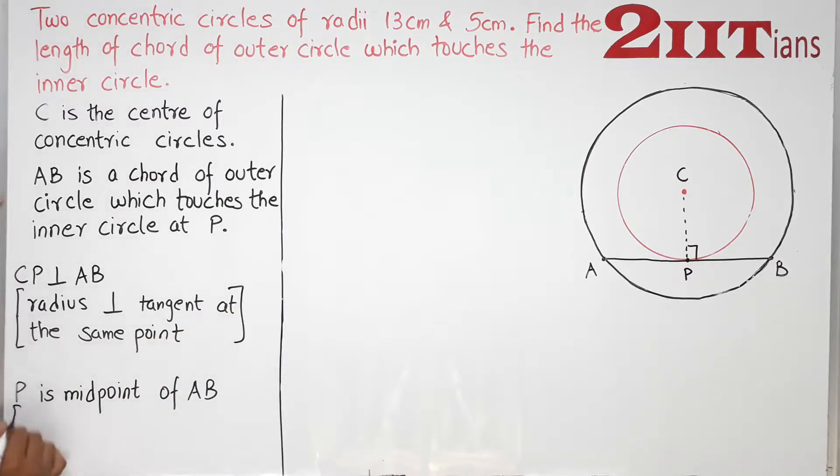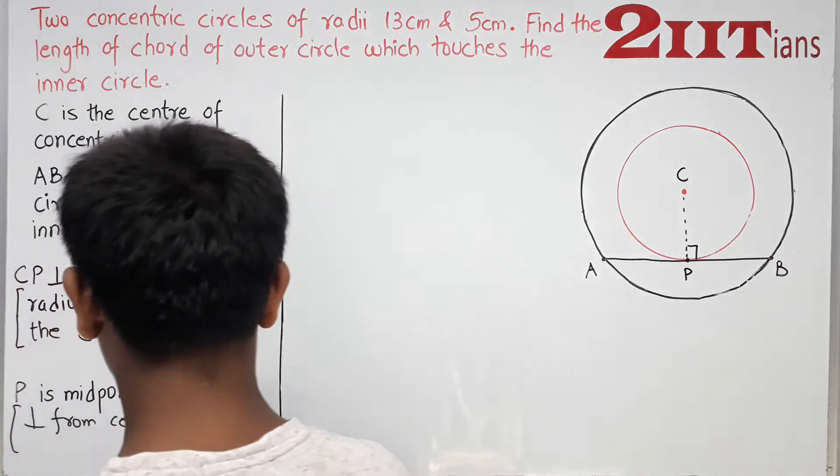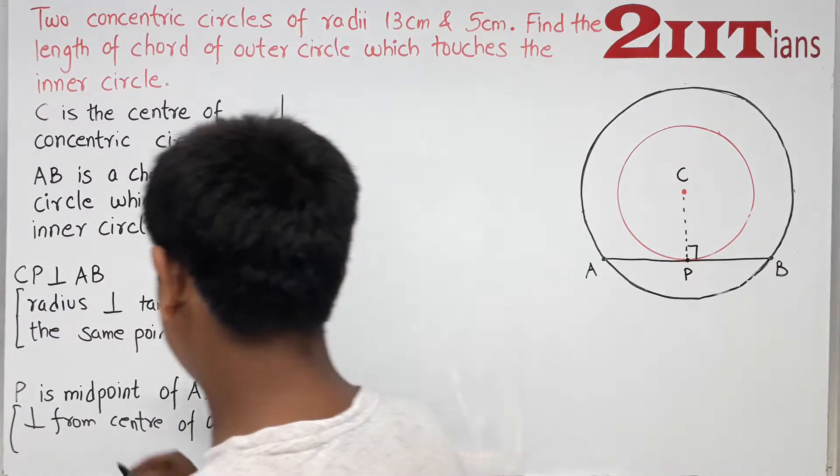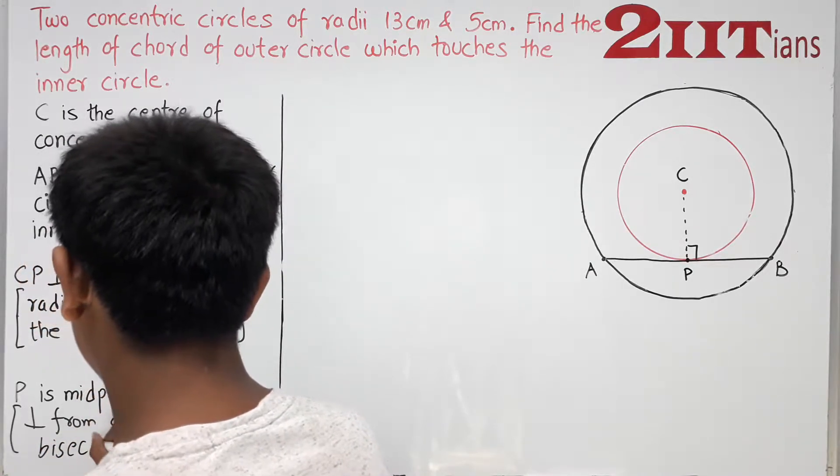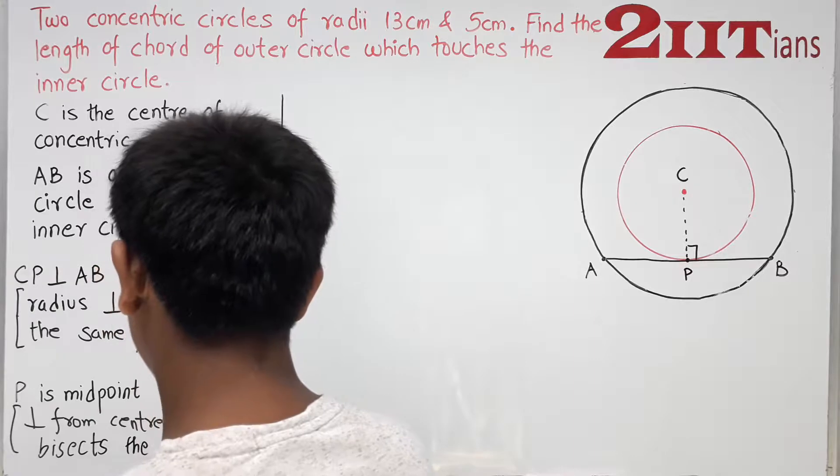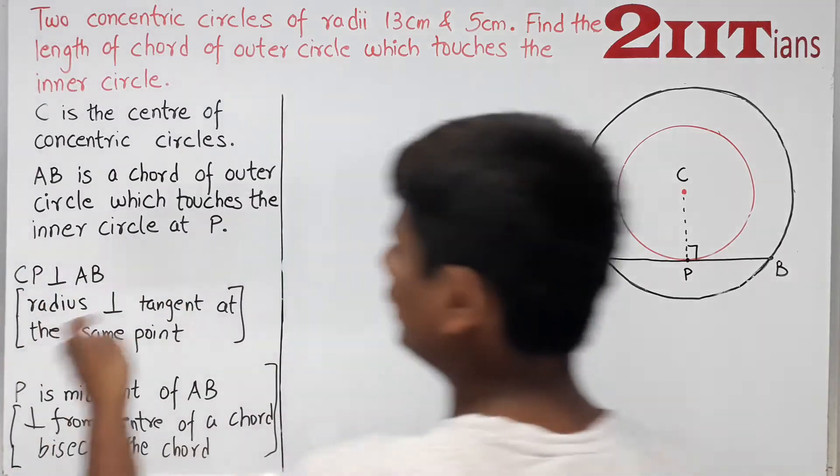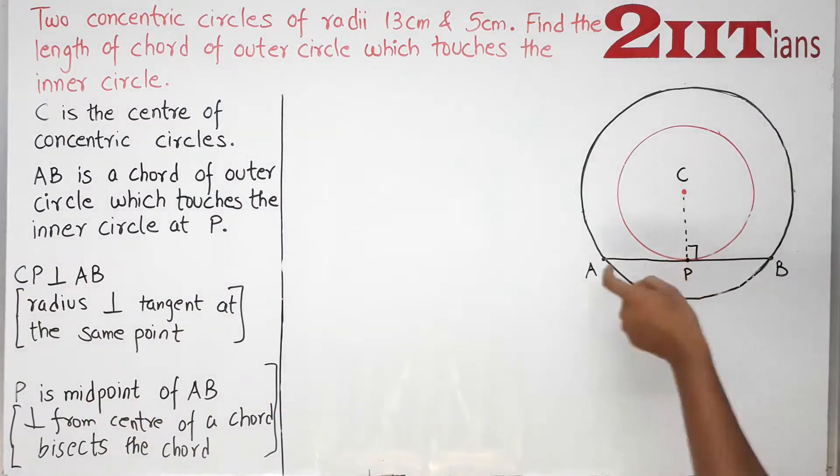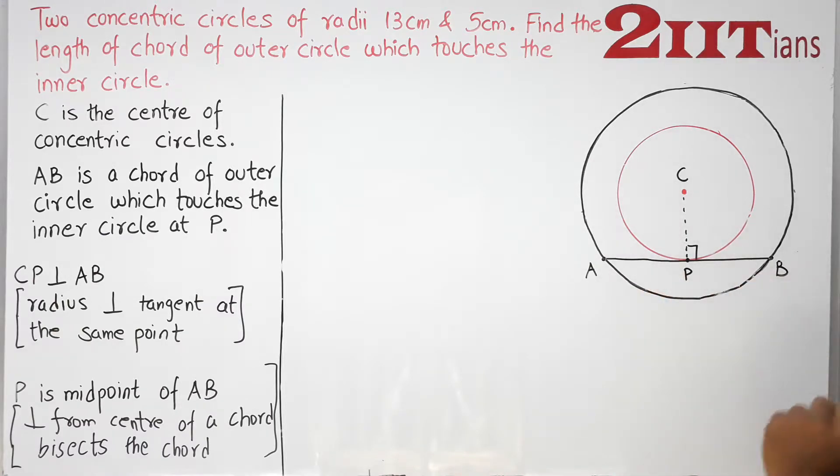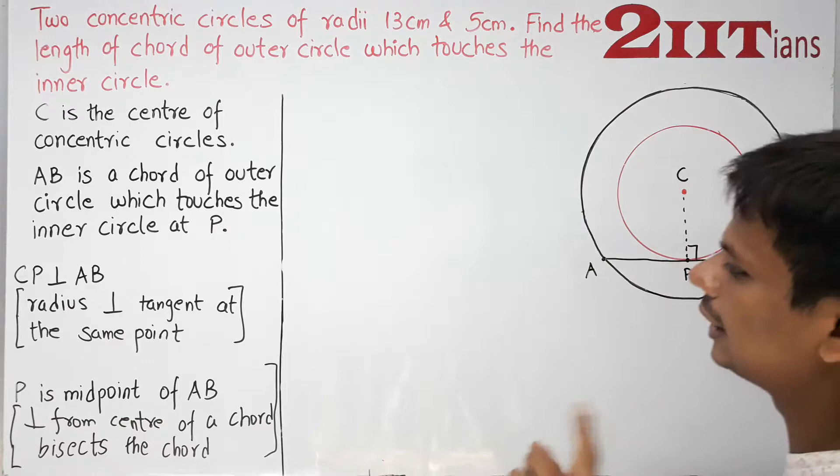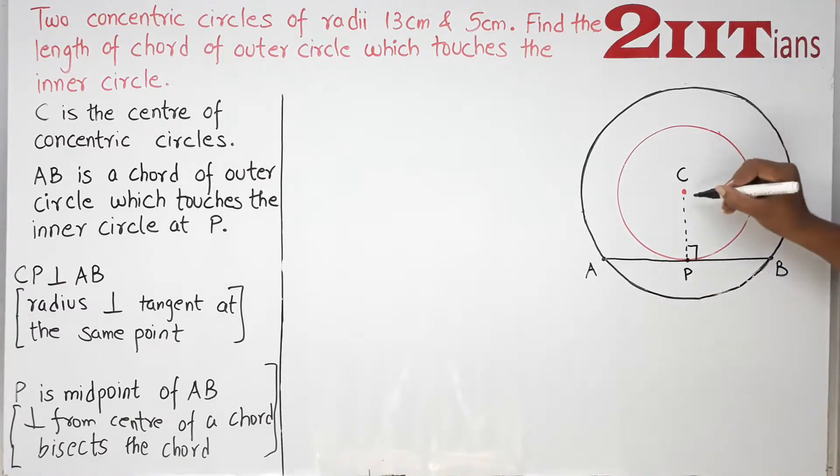The reason we can write this is: perpendicular from center of a chord bisects the chord. CP perpendicular to AB is because AB is tangent, but P is midpoint of AB because AB is a chord of the larger circle.